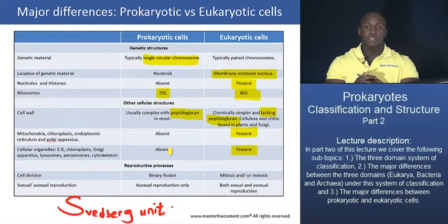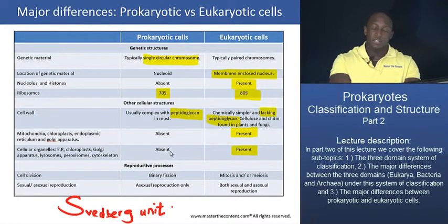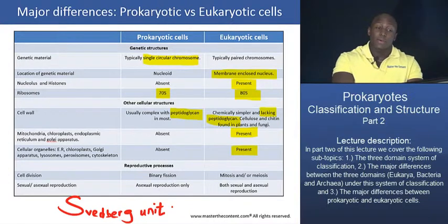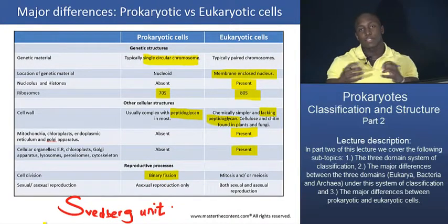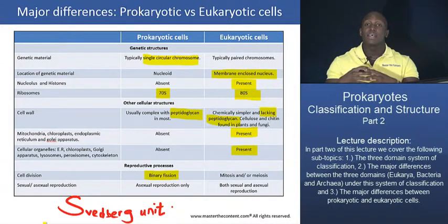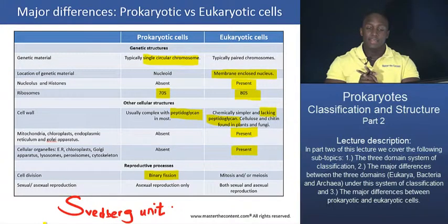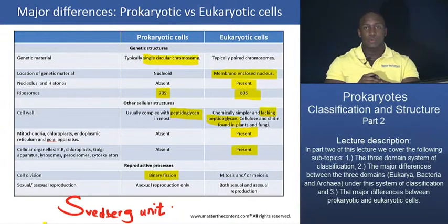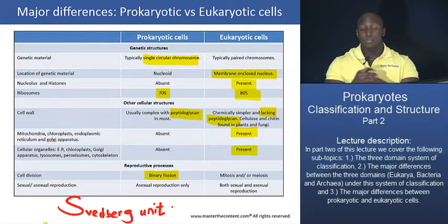The last difference to discuss is reproduction. Prokaryotic cells reproduce asexually, and the mechanism they use is a process called binary fission, where the cell doubles its genetic material and splits into two daughter cells.